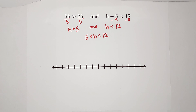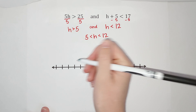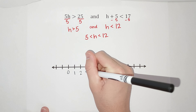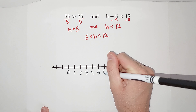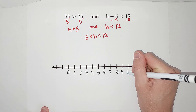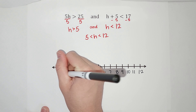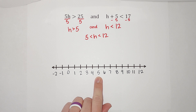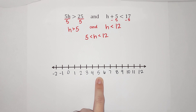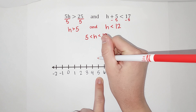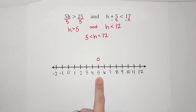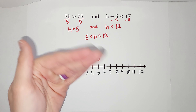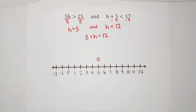Now we are going to graph these on a number line with numbers zero through twelve or so. So h is greater than 5 — here's my 5. Because there's no 'equal to' under the greater than, h can't equal 5, so I'm going to do an open circle above 5.